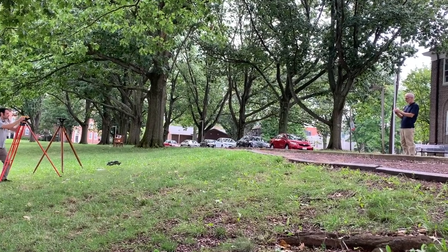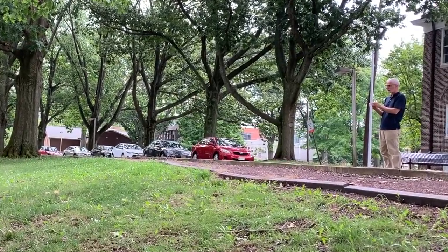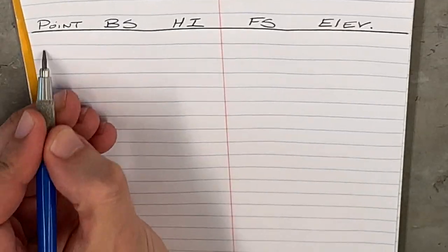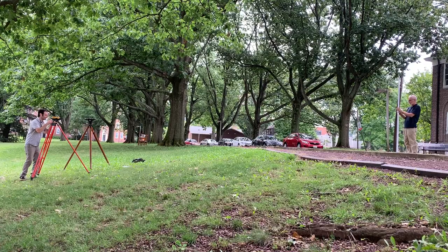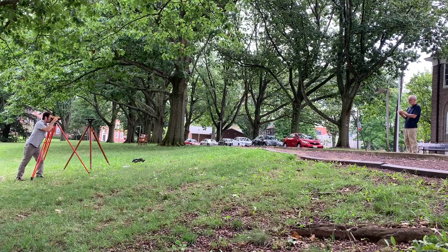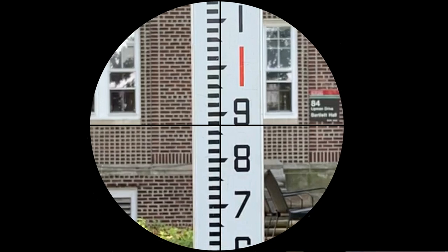Once your instruments are set up, you're ready to take your first back sight measurement. We'll be using the benchmark at the top of the curve at 100 feet. Once this starting elevation is entered and the unit is leveled, you are ready to sight the Philadelphia rod and focus in. Inside the viewfinder, you'll find the crosshairs. It's important to get those crosshairs to line up with either the top or bottom of one of the black bars. These rods are divided into tenths and hundredths of a foot, with the red numbers indicating entire feet and the black numbers indicating tenths of a foot.